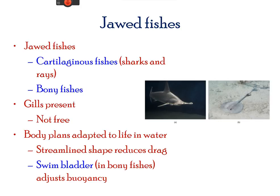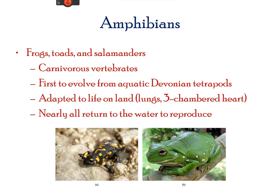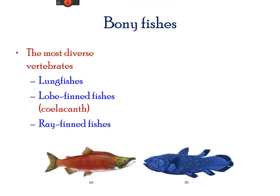Jawed fishes have jaws that are cartilaginous and bony, which allow the fish to grasp and tear its food. These include the sharks and rays, which have body plans adapted to aquatic life. Members of the bony fish are very diverse and the vast majority of fishes belong to this group. They have an ossified skeleton, meaning composed of bone cells. They also have a lateral line system which helps to detect vibrations in water.